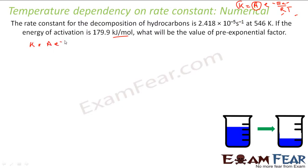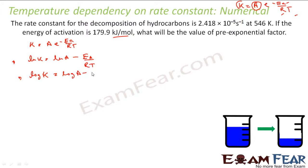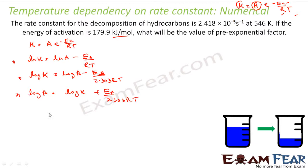We have K equals A·e^(−Ea/RT). Taking ln of both sides, ln K equals ln A minus Ea/RT. If we want to use log instead, we get log K equals log A minus Ea/(2.303·RT), because converting from ln to log requires the 2.303 factor. We need to find A, so let's put log A on the left-hand side: log A equals log K plus Ea/(2.303·RT).